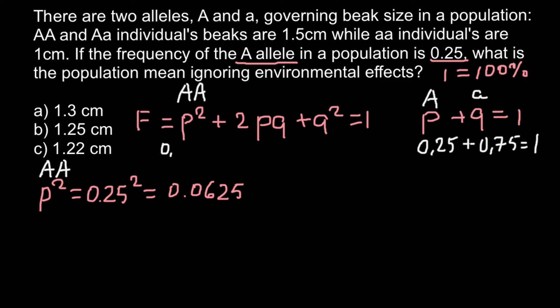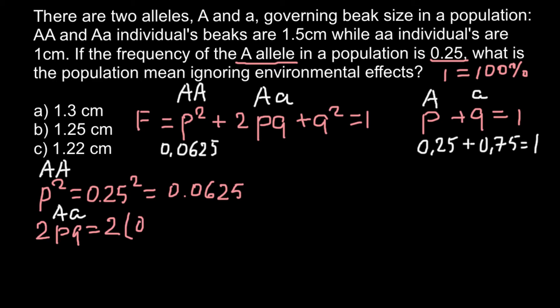Now we can find the frequency of the heterozygous genotype. 2PQ stands for the heterozygous genotype. So 2PQ equals 2 multiplied by P (0.25) and by Q (0.75), and the answer is 0.375. This is the frequency of the heterozygous genotype.